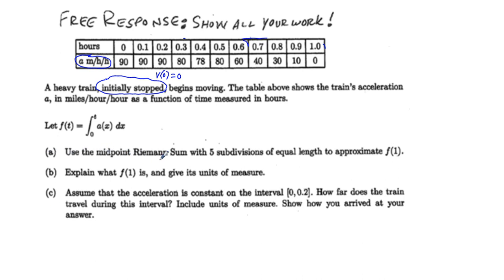Use the midpoint Riemann's sum with five subdivisions of equal lengths to approximate f(1). This takes advantage of the relationship between position, velocity, and acceleration. To eliminate the rate we need to integrate, so acceleration is a rate, but it's a rate of a rate of change, and so the integral is going to be velocity. When we take the integral of the acceleration we're going to get a velocity or speed.